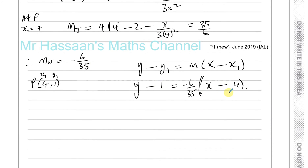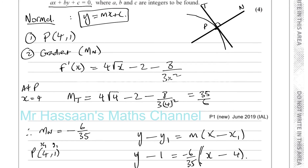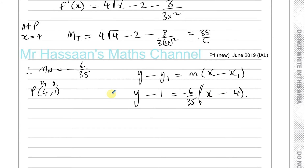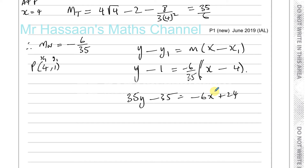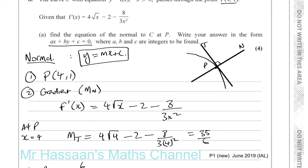Now we sort out the equation and write it in the form ax + by + c = 0 where a, b, c are integers. Multiply both sides by 35 to clear the fraction: 35y − 35 = −6x + 24. Adding 6x to both sides and rearranging: 6x + 35y − 59 = 0. That is the answer to part (a).